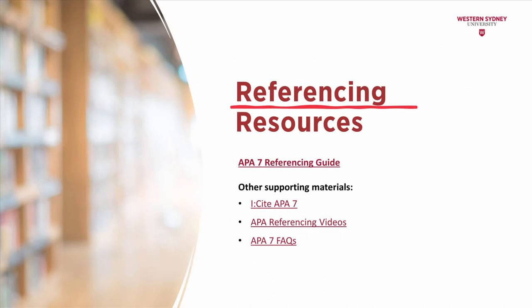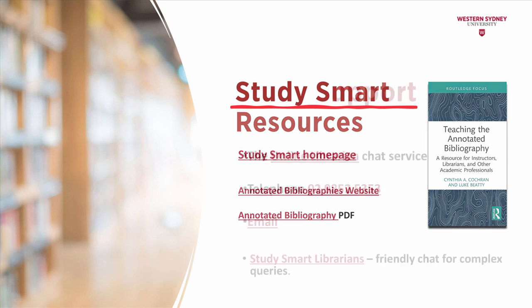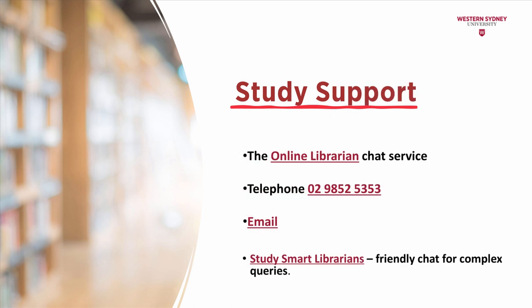On the library's website for referencing and citation, you can find referencing resources such as the APA 7 referencing guide, iCite referencing tool for APA 7 style, referencing videos, and frequently asked questions that can assist you with your referencing. On the StudySmart homepage, you can find the academic writing resources that will help you with the writing process of an annotated bibliography. The library provides study support for all your queries related to academic writing, information search, and referencing.